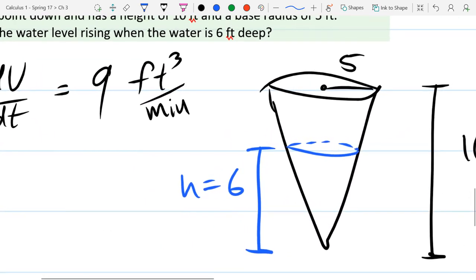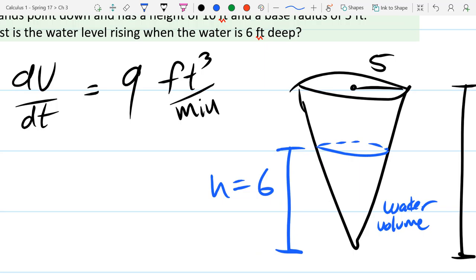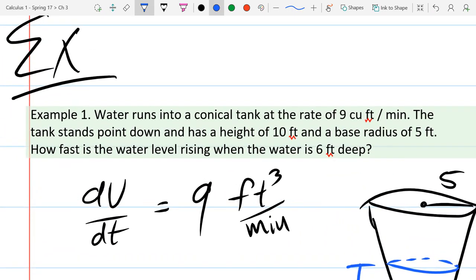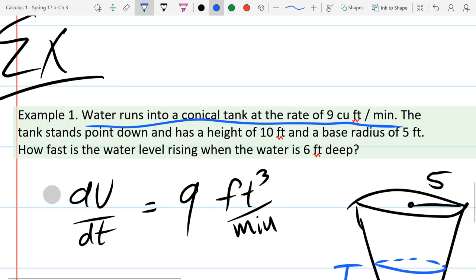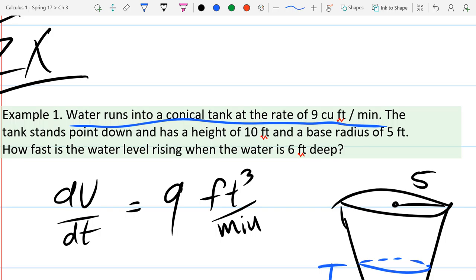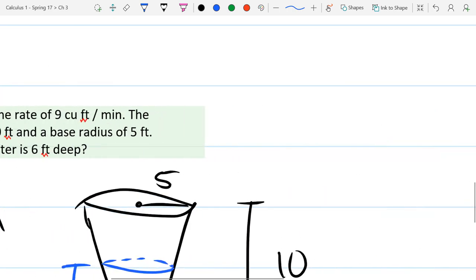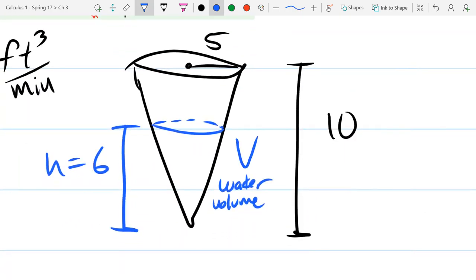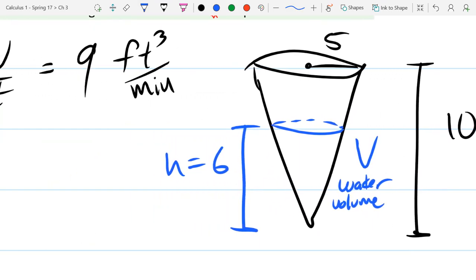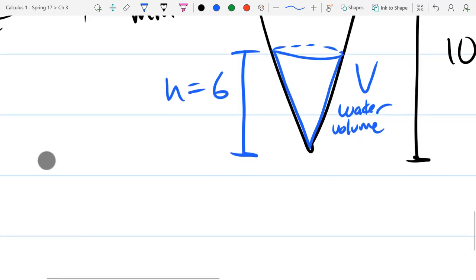So we're going to need a variable for anything that's going to change or anything that's going to vary. So I'm going to need a variable for 6 right here. We'll use h for that, for height. I don't want to use a variable for the 5 and the 10 because the tank's not changing size. How do I relate the volume? Now, when I get the volume, I need to compute the volume of the water. And what's the formula for volume in a cone?